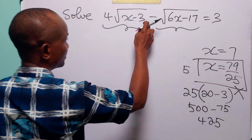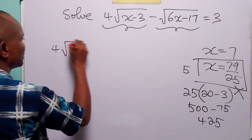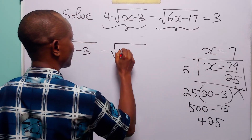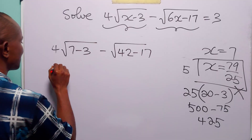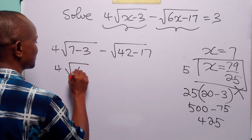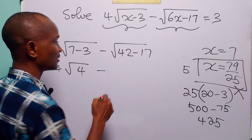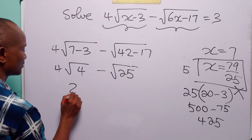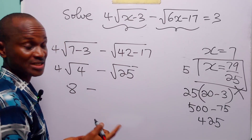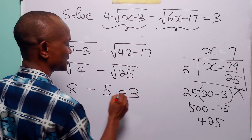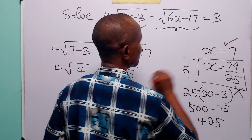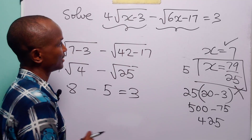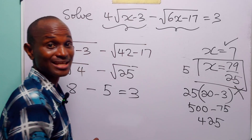When x = 7: left-hand side = 4√(7-3) - √(6×7 - 17) = 4√4 - √25 = 4×2 - 5 = 8 - 5 = 3. The left-hand side equals the right-hand side, so x = 7 satisfies the original equation. Therefore the only solution to this radical equation is x = 7.